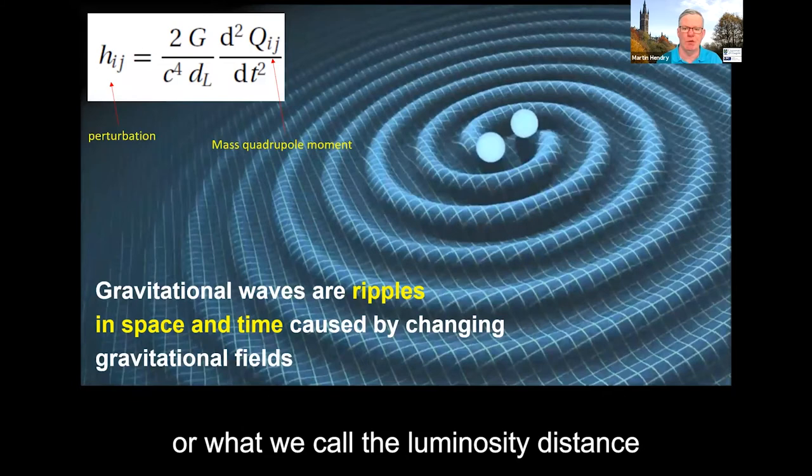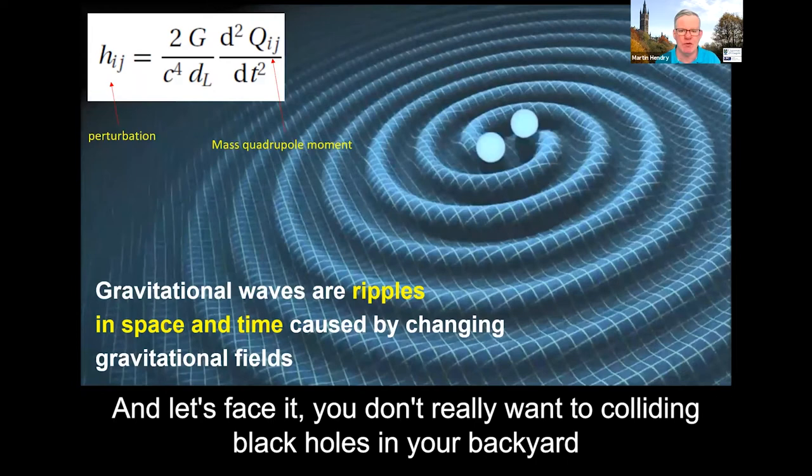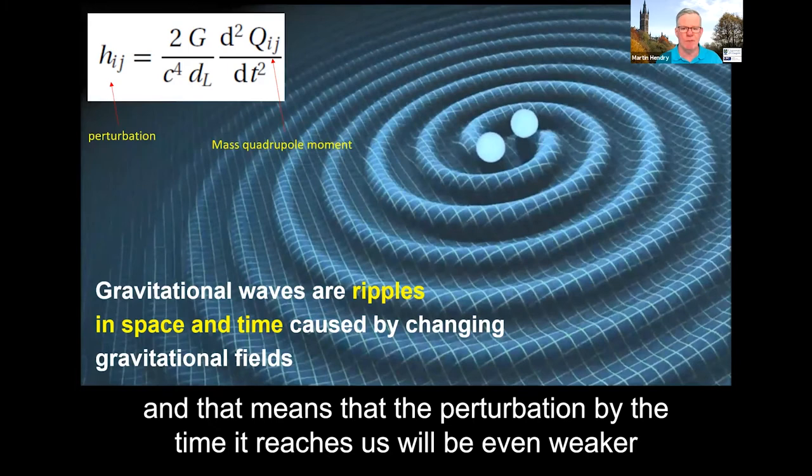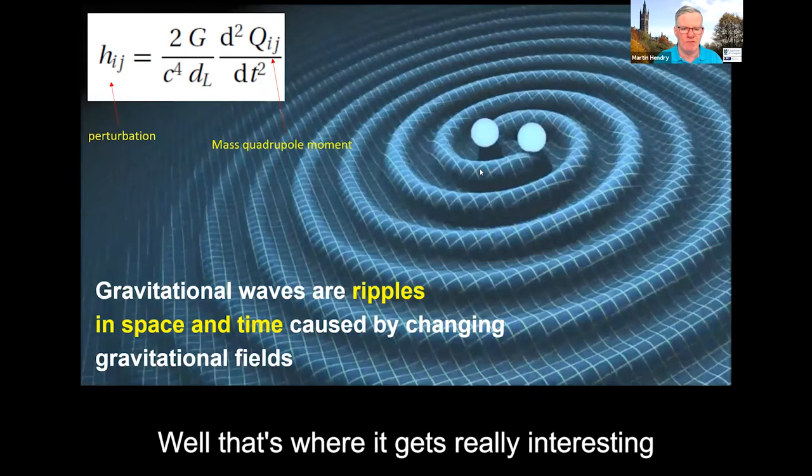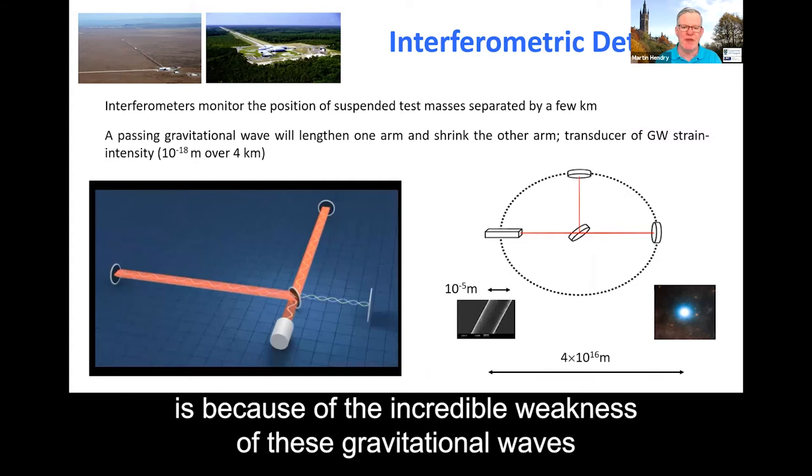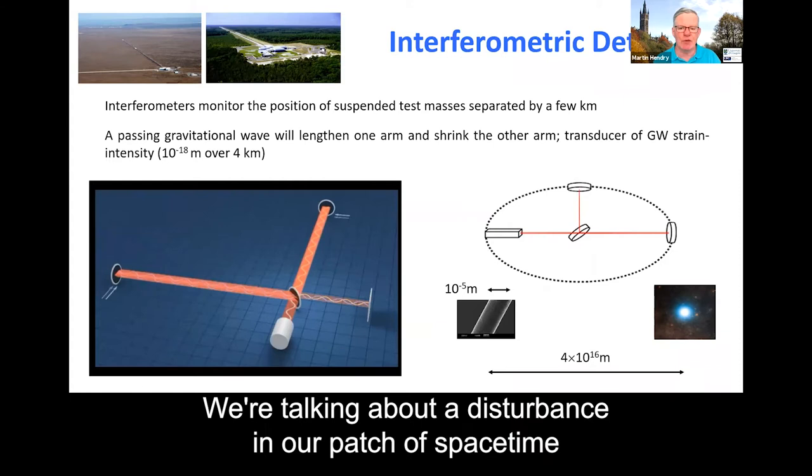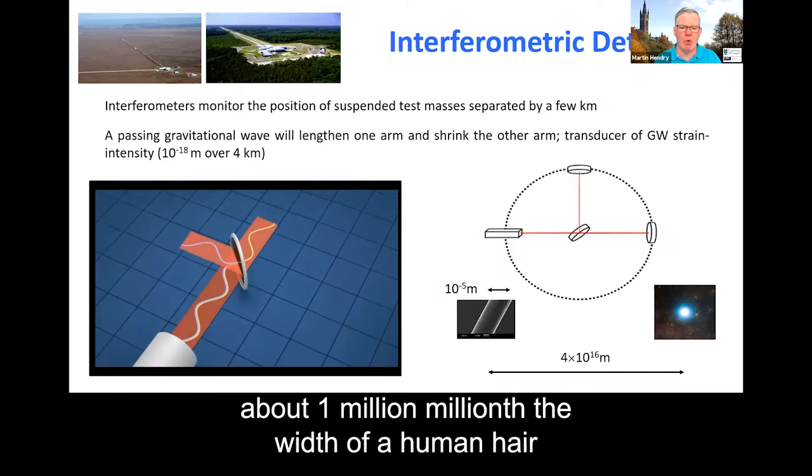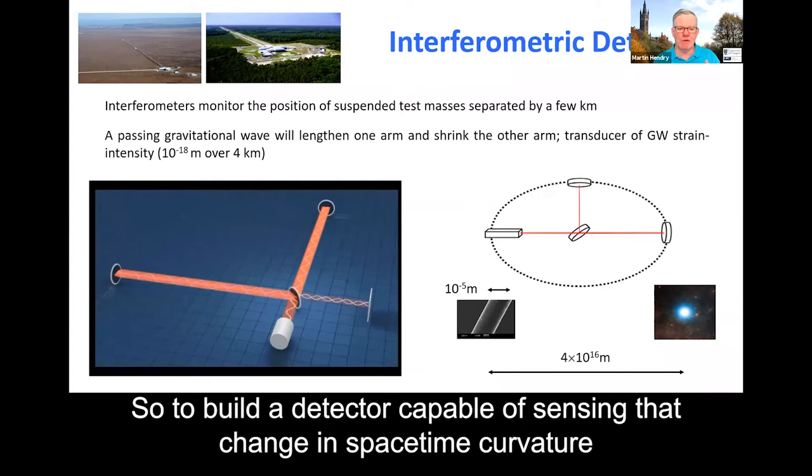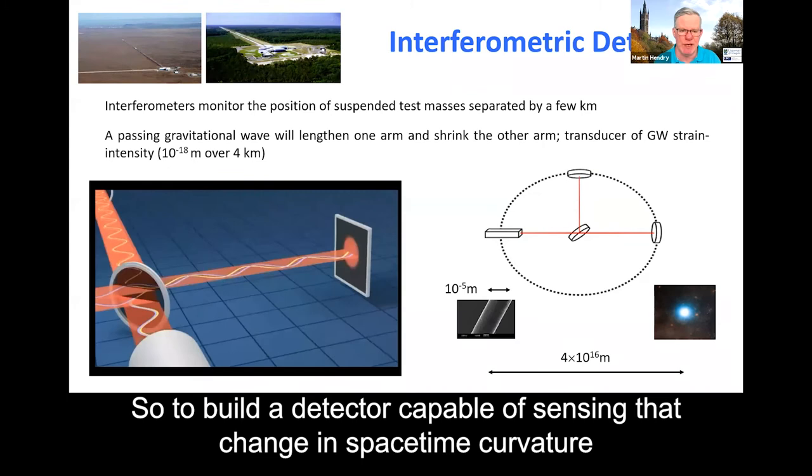And what makes it worse is that we're dividing that by the distance, the luminosity distance to a gravitational wave source. And let's face it, you don't really want two colliding black holes in your backyard. So the chances are these sources are going to be very far away, and that means that the perturbation by the time it reaches us will be even weaker. So how weak are we talking about? Well, that's where it gets really interesting, because the reason it took us about 100 years to develop the technology to detect these gravitational waves is because of the incredible weakness of these gravitational waves compared with our everyday experience. We're talking about a disturbance in our patch of spacetime equivalent to about 1 million millionths the width of a human hair, or equivalent to the width of a hair over a distance between us and Alpha Centauri.